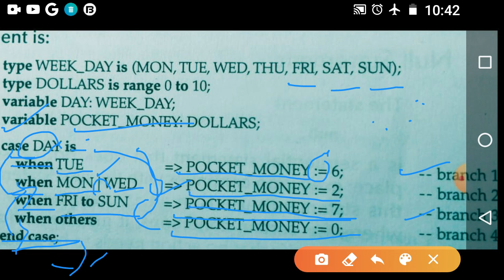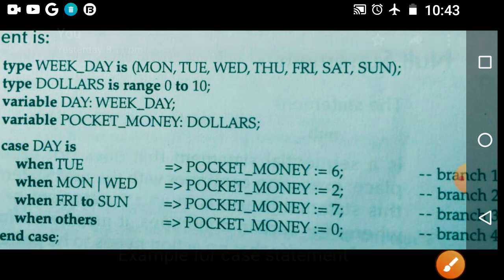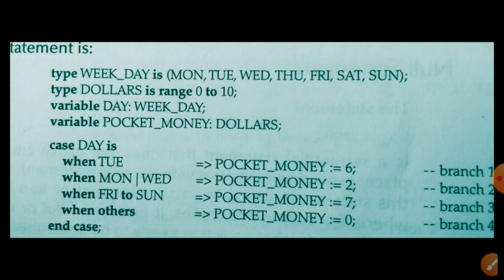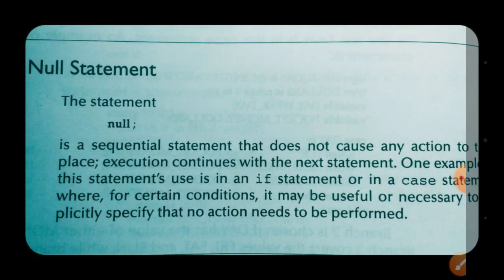If you selected Thursday, since Thursday is not present in any of the choices, the case statement directly goes to the 'when others' branch, executes branch 4, and then control goes to the next statement. This is the beauty of the case statement — it is very easy to maintain and debug. When there are more conditions, it is preferred to use the case statement.